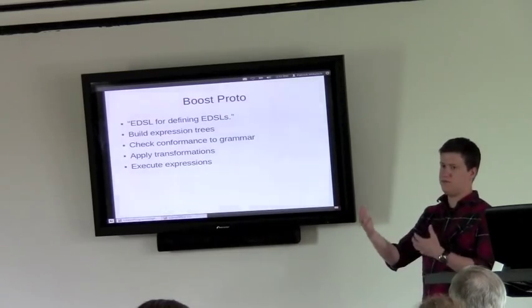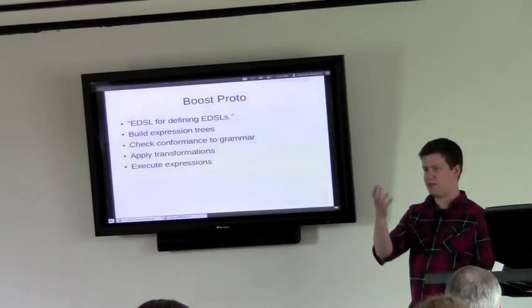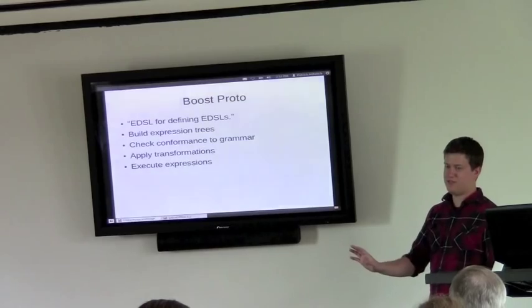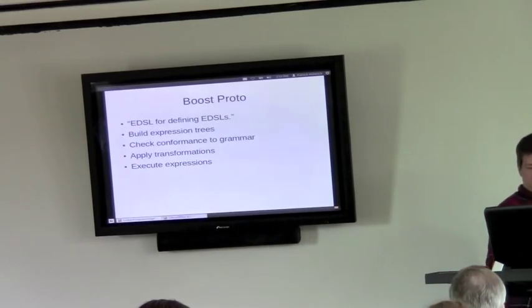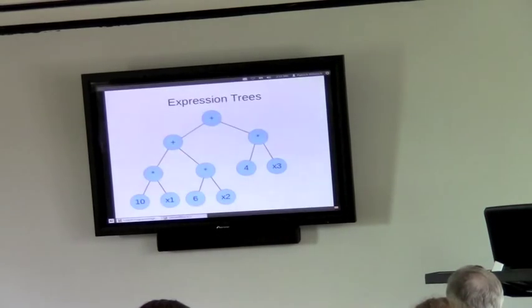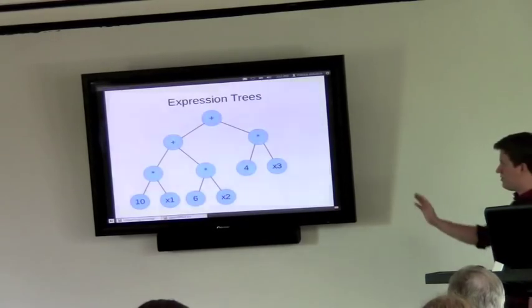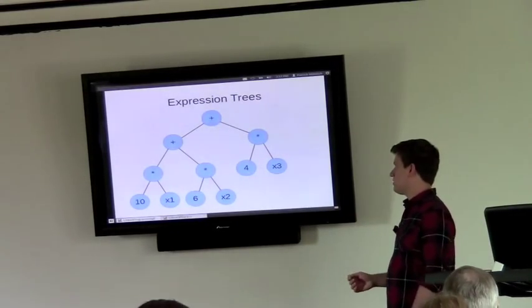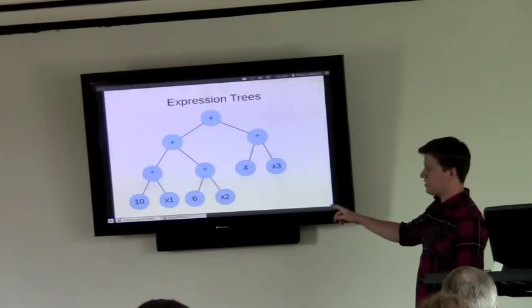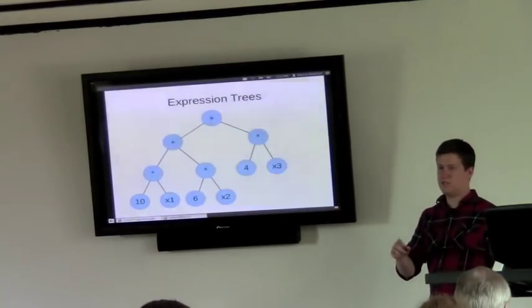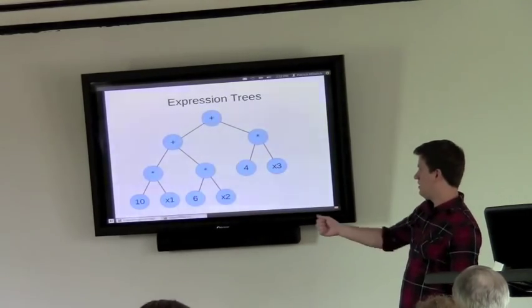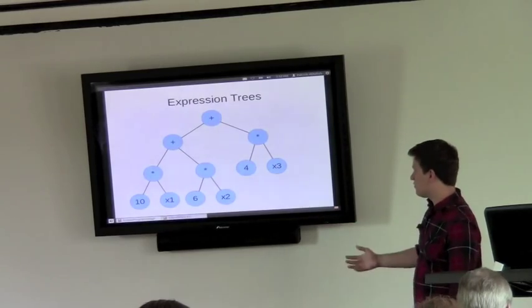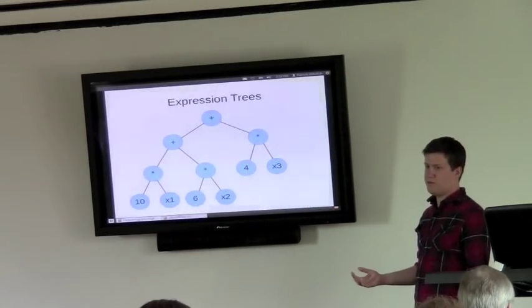And so, yeah, at the end you can, once you're done filming around, you can actually execute the thing and generate real code. So, okay, here's what a simple expression tree looks like. This is the objective function from that simple LP that I showed earlier. So 10 times x1 plus 6 times x2 plus 4 times x3. And Proto defines all of these operators. So it will build up this tree for you.